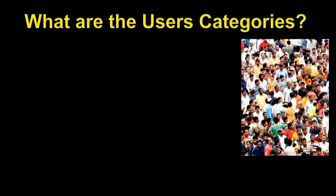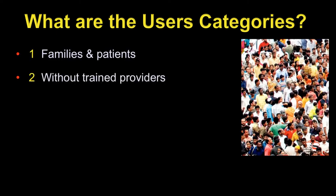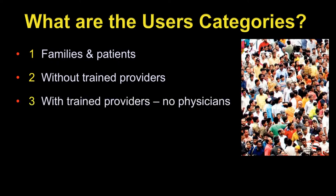Who are the users for our material if you look at the population as a whole? First of all, there are families and patients. Number two, there would be groups without trained providers, like perhaps a billion people in the world. The third group is where there are trained providers, like nurses or community health care workers, but no physicians.